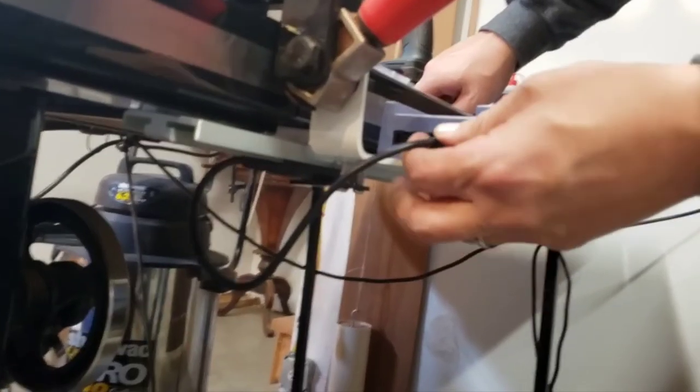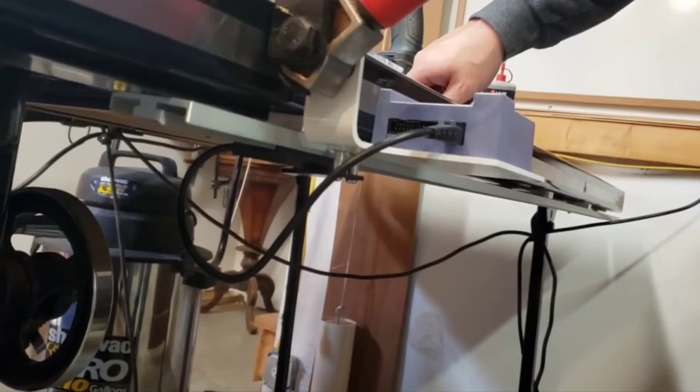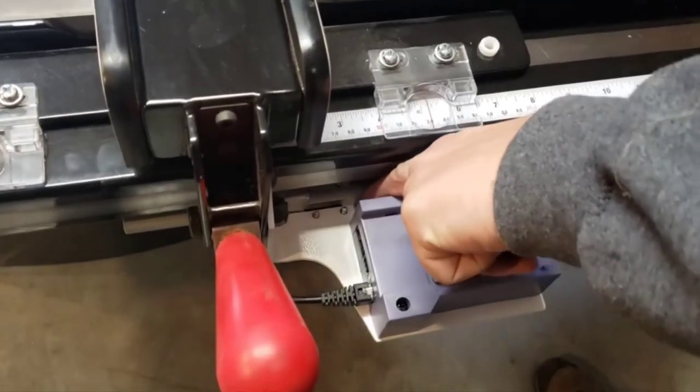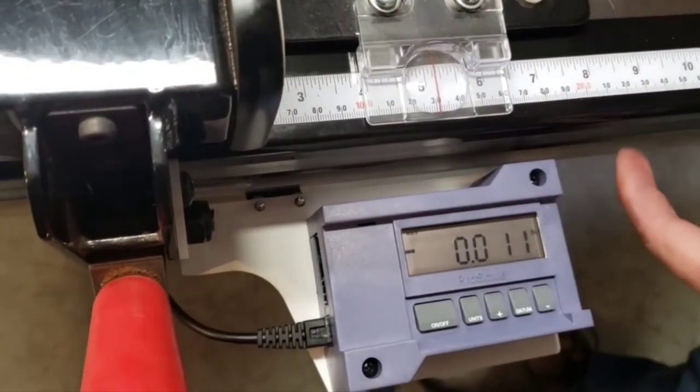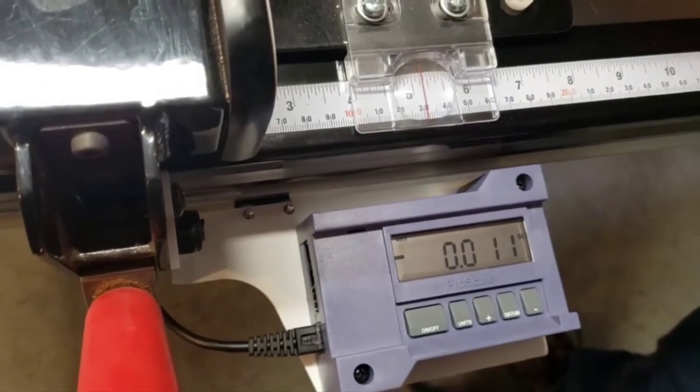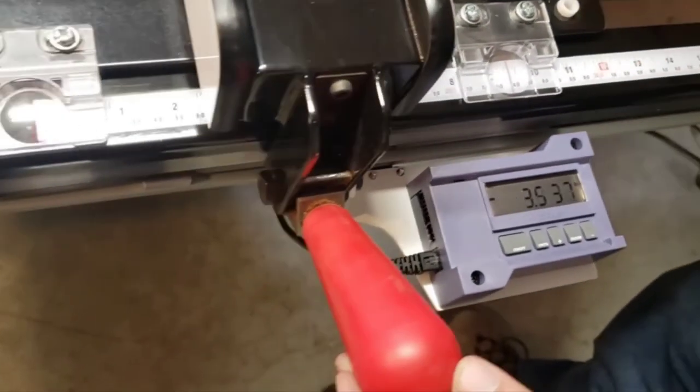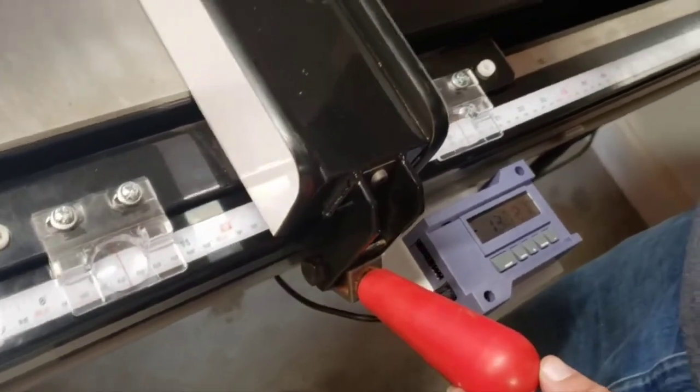Final Setup. Step 28: Connect the encoder cable to the digital readout. Step 29: Move the fence in both directions, checking for binding. Make sure that the gap between the readout bracket and the fence does not close to 0 and that the gap is consistent. Adjust the guide clip spacing or the fence alignment as needed.